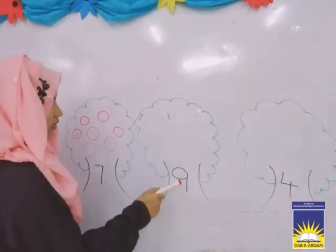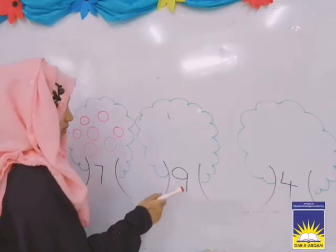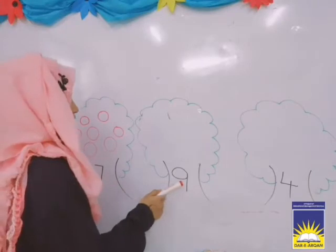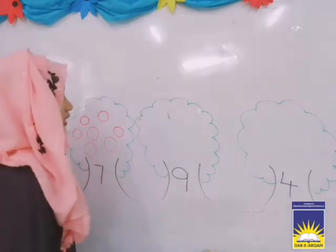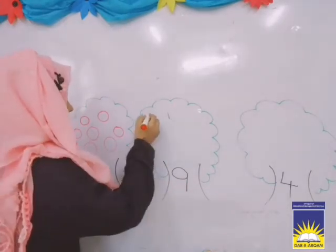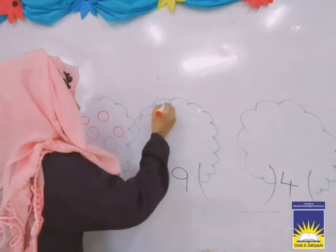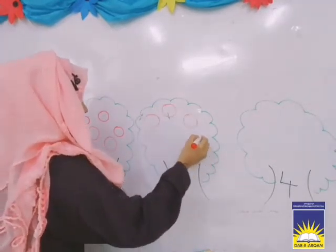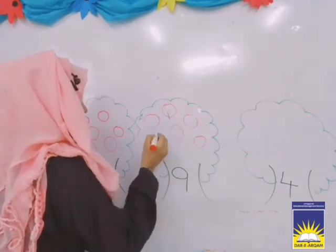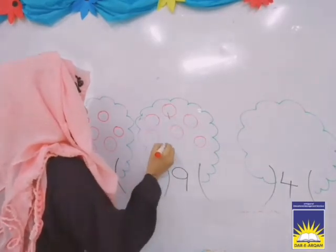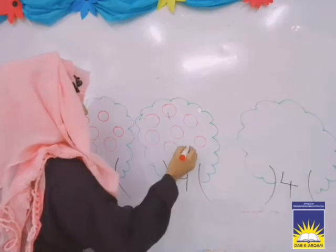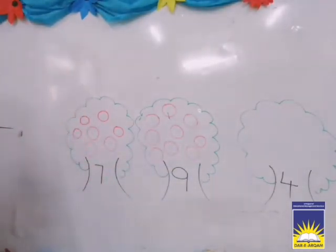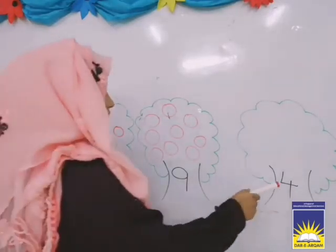Now come on this tree. Which number is this? 9. Number 9. So I have to make 9 oranges: 1, 2, 3, 4, 5, 6, 7, 8, 9. Okay?